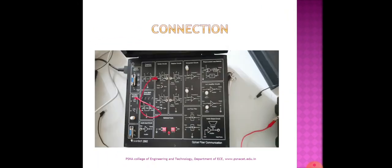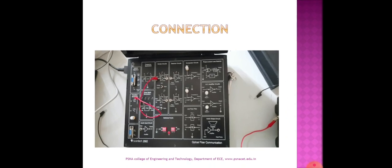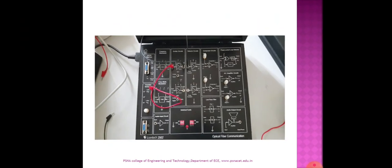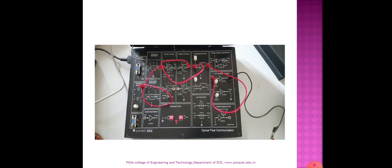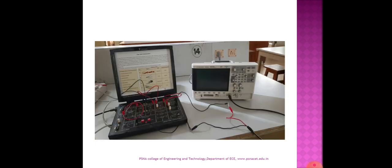There is one more kit available in the lab for doing analog transmission, digital transmission, and bit-rate transmission. The step-by-step connection shows the inbuilt function generator signal given to the emitter circuit. From the emitter output, the optical fiber cable is connected to the LED circuit. Then the output is given to the comparator circuit, from the comparator to the AC amplifier circuit, and through the optical fiber kit the signal is transmitted. This is the complete kit connection.